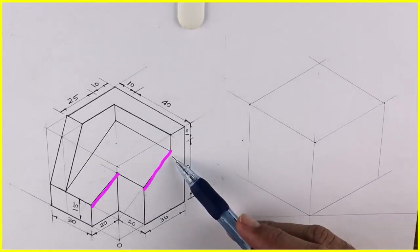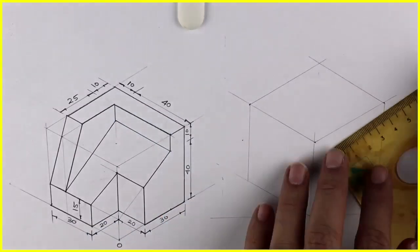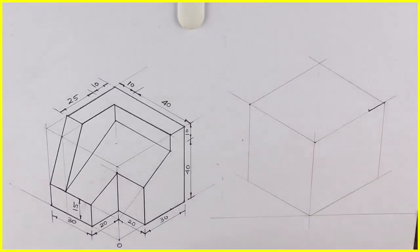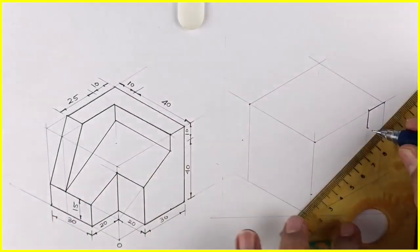One and two. So first we'll try and draw this loop. Now for that, how much do we need? 15 and 10. So we'll mark 10 over here and 15 from here. We'll go down by 10 and we will draw this slope.